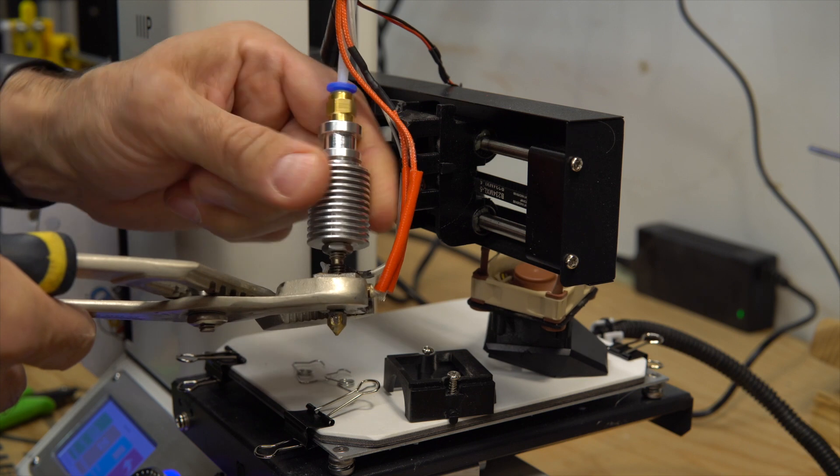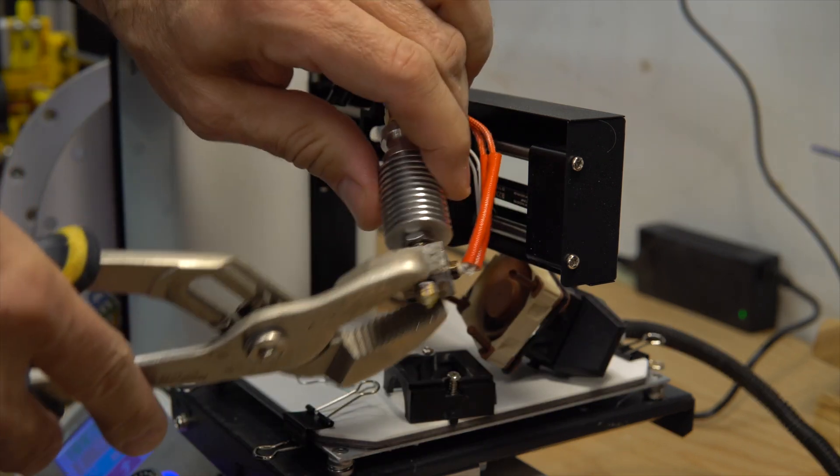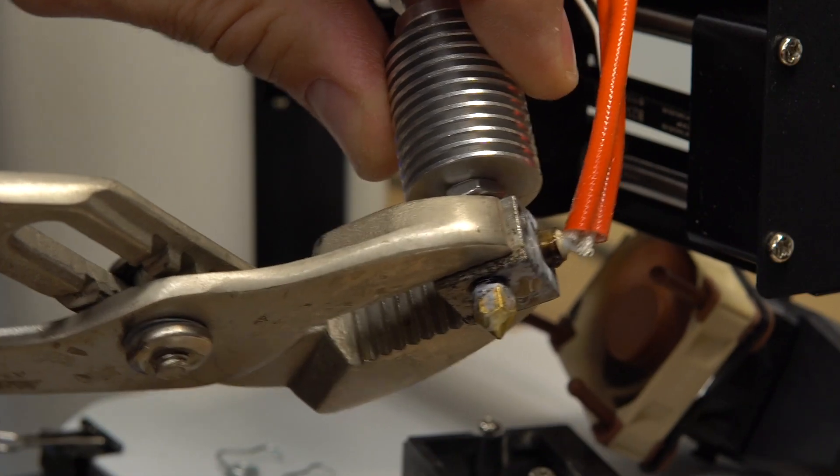So you screw in until the end, then back off a bit because I want the nozzle to be as close as possible to the heat block, but without touching it.